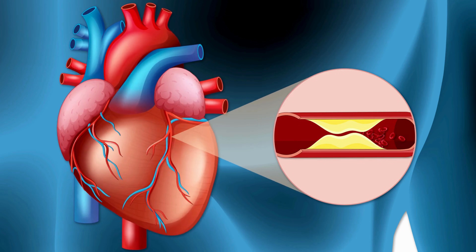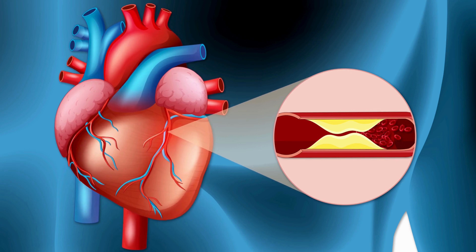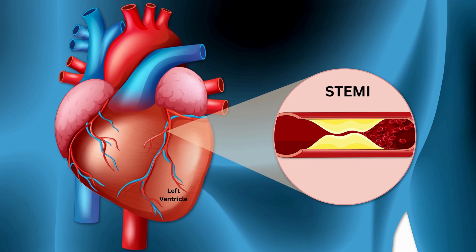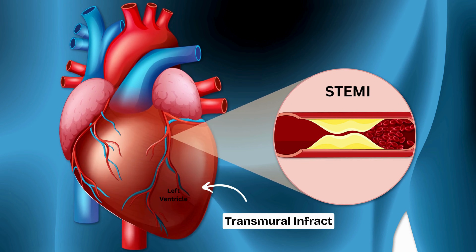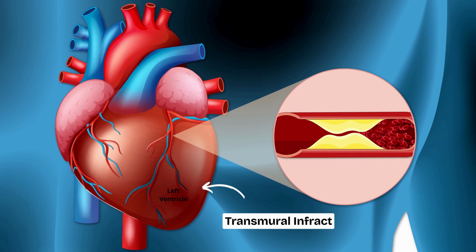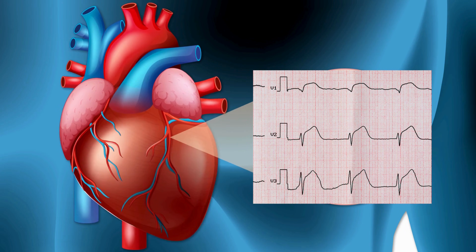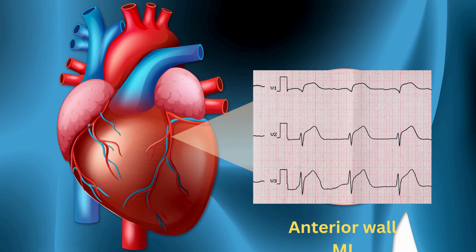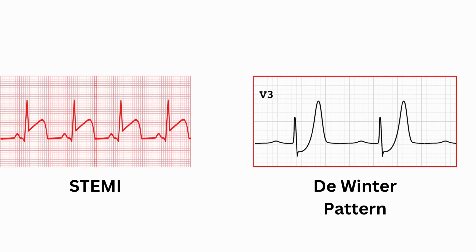Because if you don't catch it early, the chances of survival drop fast. In the classic STEMI, the heart muscle dies all the way through — that is what we call a transmural infarct. The injury changes how current flows in the myocardium, and the result is an upward shift in the ST segment. So when you see ST elevation in leads V2 to V4, you instantly think anterior STEMI, and usually that's correct.